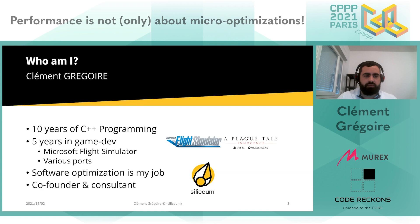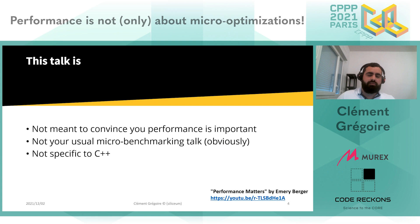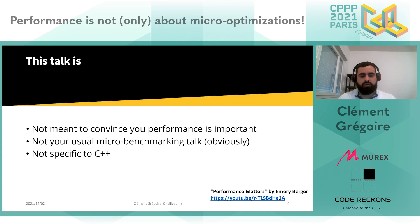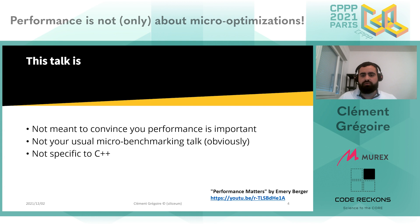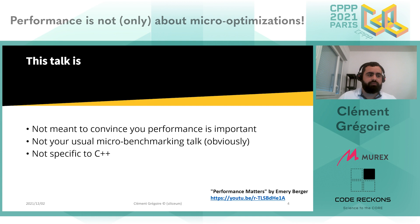This talk is not meant to convince you that performance is important — there are other people that did those talks way better than I could. This is not a micro-benchmarking talk. I will try to show you that you need to start by taking a step back and take a look at the macro view of your system before diving into your code. This is also not specific to C++; it's a general talk about performance that will give you some methods, some theory, and then we'll dive into a use case.